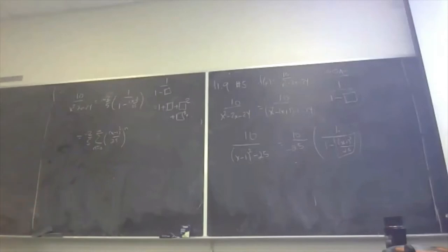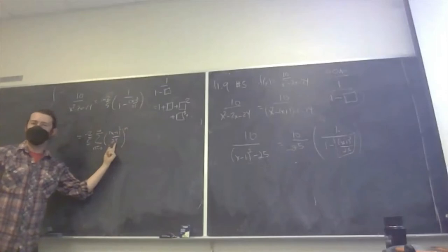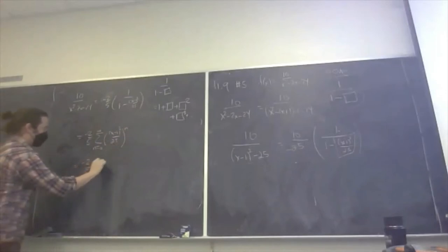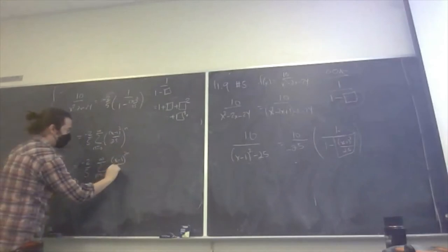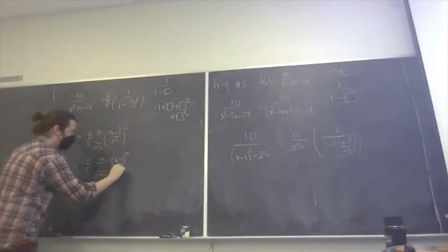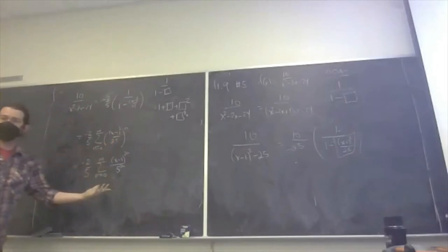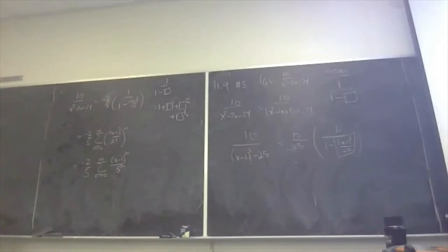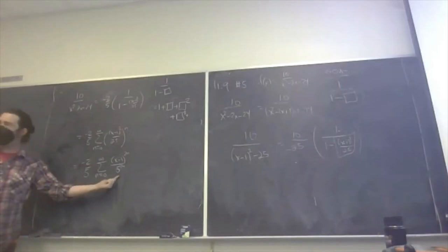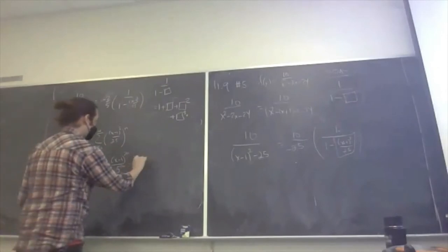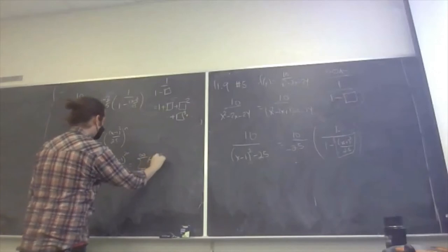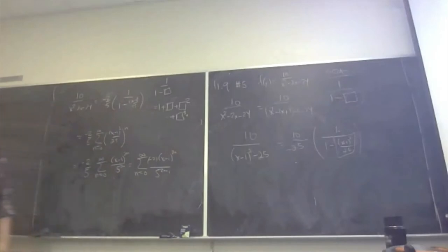You can do some manipulation to make it look nicer. Since 25 is 5 squared, you can rewrite 25 to the n as 5 to the 2n. So you get x minus 1 to the 2n over 5 to the 2n. There's still a minus 2 fifths out front, so when you multiply that in, that 5 to the 2n becomes 5 to the 2n plus 1. This turns into the sum from n equals 0 to infinity of minus 2 times (x minus 1) to the 2n over 5 to the 2n plus 1.